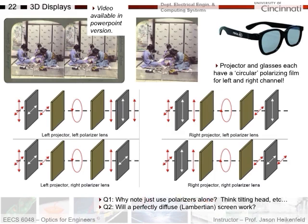Why use circular polarization instead of just two linearly polarized projectors? This system is more fault tolerant: because the light is circularly polarized, it doesn't matter how you rotate the glasses — you get the same effect regardless of the glasses' orientation. Also, special screens are required. You can't use a perfectly diffuse or Lambertian screen, because when polarization hits the screen it gets scattered. You need a screen that reflects more like a mirror, which preserves the polarization.